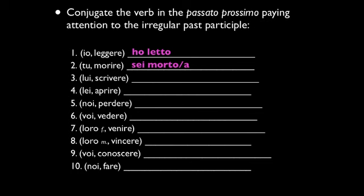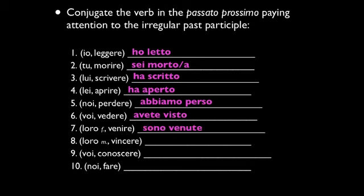Number three: LUI SCRIVERE — that's HA SCRITTO. Four: LEI APRIRE — that's HA APERTO. Five: NOI PERDERE — ABBIAMO PERSO. Six: VOI VEDERE — that's AVETE VISTO. As an alternative, sometimes you'll see VEDUTO, but VISTO is more common as a past participle. Seven: LORO VENIRE — that's an ESSERE verb — SONO VENUTE. Notice it's the feminine form, so make sure you have the E at the end of the past participle. Eight: LORO VINCERE — HANNO VINTO.